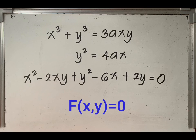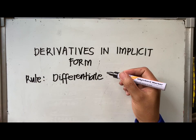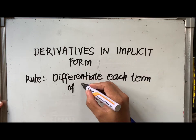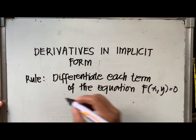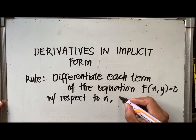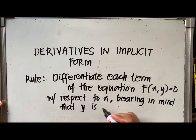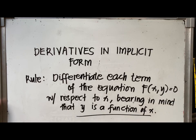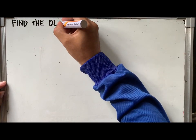Now, let's move on to the rule on how to differentiate equations in implicit form. The rule is, differentiate each term of the equation f of xy equal to 0 with respect to x, bearing in mind that y is a function of x. Now, let's start solving the first problem.